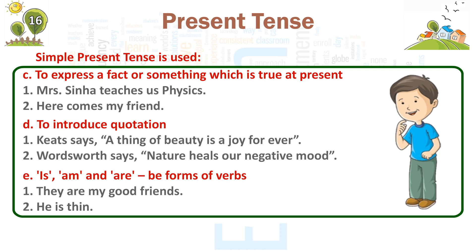D. To introduce a quotation — 1. Keats says, 'A thing of beauty is a joy forever.' 2. Wordsworth says, 'Nature heals our negative mood.' E. Is, am, and are — be forms of verbs. 1. They are my good friends. 2. He is thin.